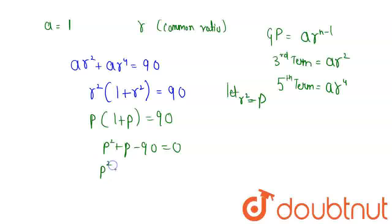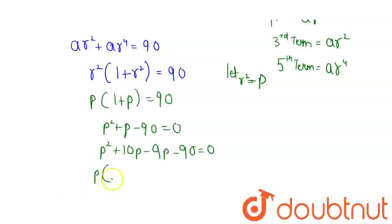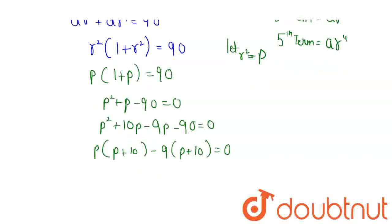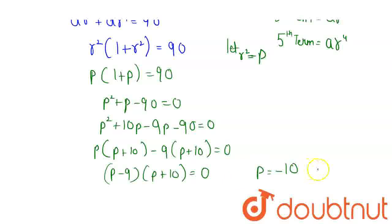Now, splitting the middle terms: P² + 10P − 9P − 90 = 0. Taking P common from the first pair: P(P + 10) − 9(P + 10) = 0. From here we get P = −10 and P = 9. P cannot equal −10 because that would make R² = −10, and taking its square root is not defined.